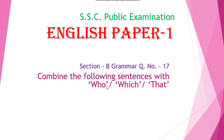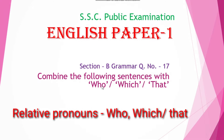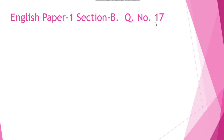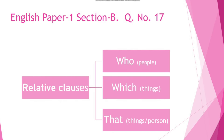The question asks you to combine the following sentences with who, which, or that. These three are called relative pronouns. This is question number 17, and it is very easy — it involves relative clauses. The relative pronouns are who, which, and that.